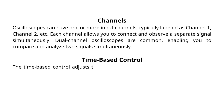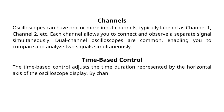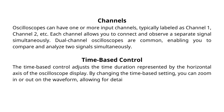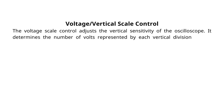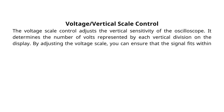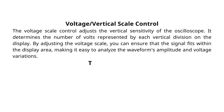Time-based control: the time-based control adjusts the time duration represented by the horizontal axis of the oscilloscope display. By changing the time-based setting, you can zoom in or out on the waveform, allowing for detailed observation or a broader view of the signal. Voltage/vertical scale control: the voltage-scale control adjusts the vertical sensitivity of the oscilloscope. It determines the number of volts represented by each vertical division on the display, making it easy to analyze the waveform's amplitude and voltage variations.